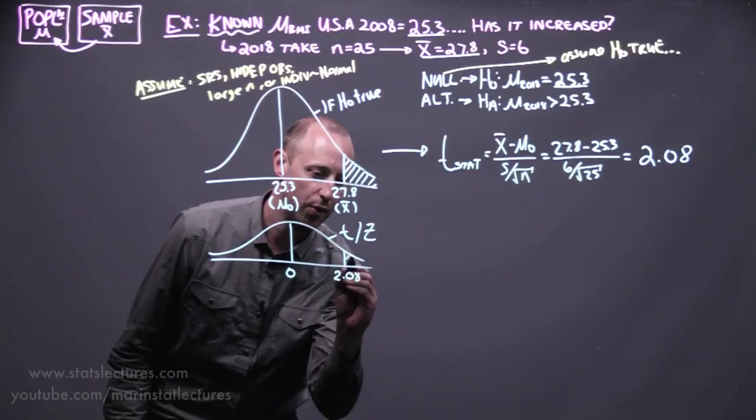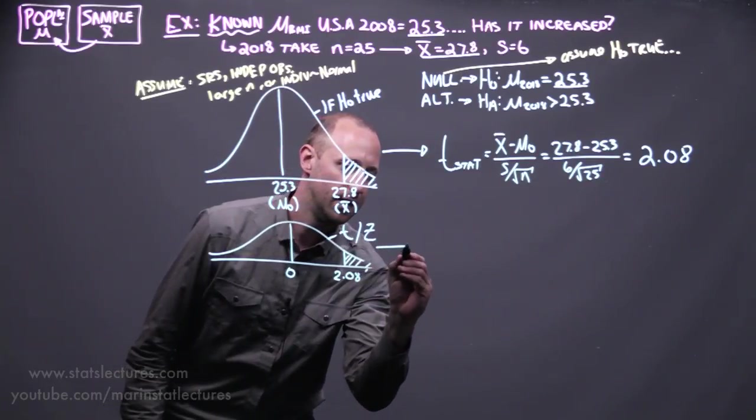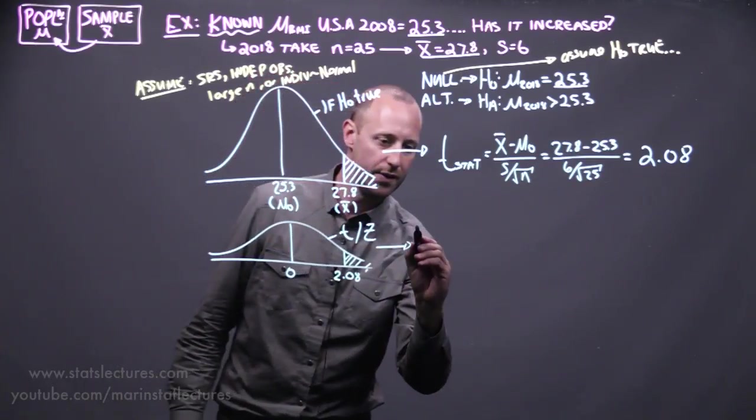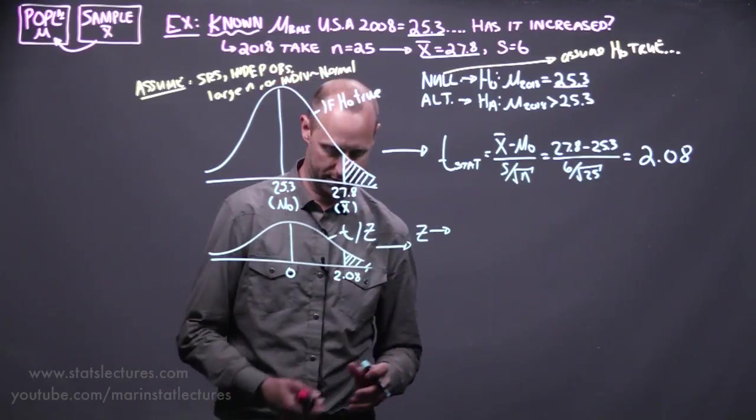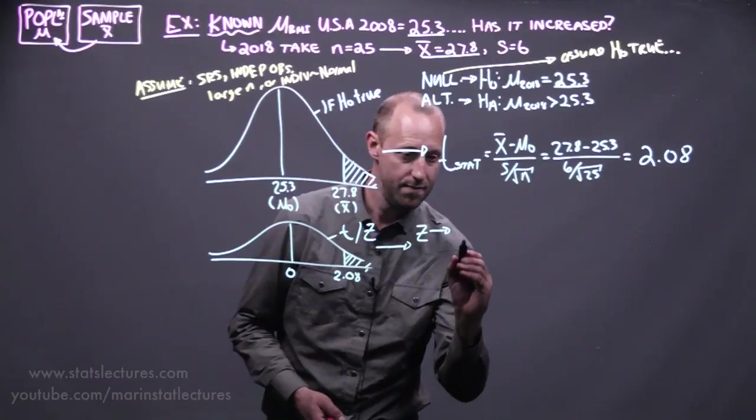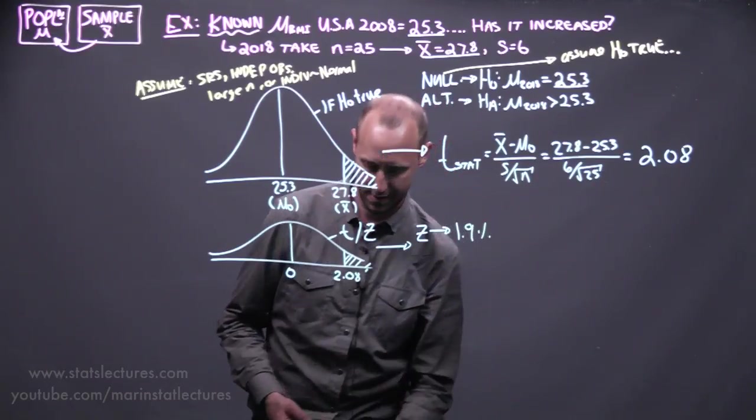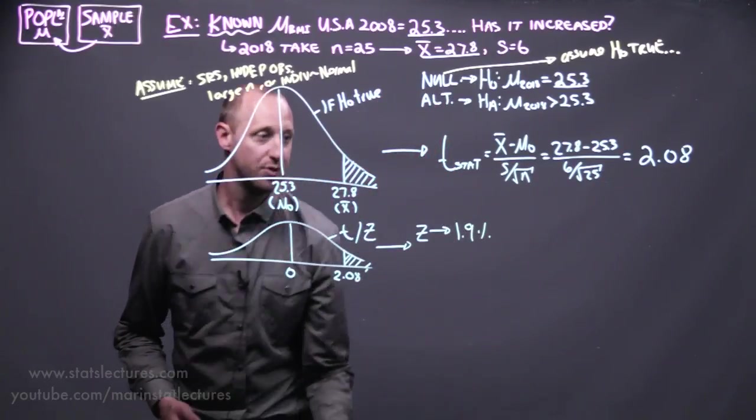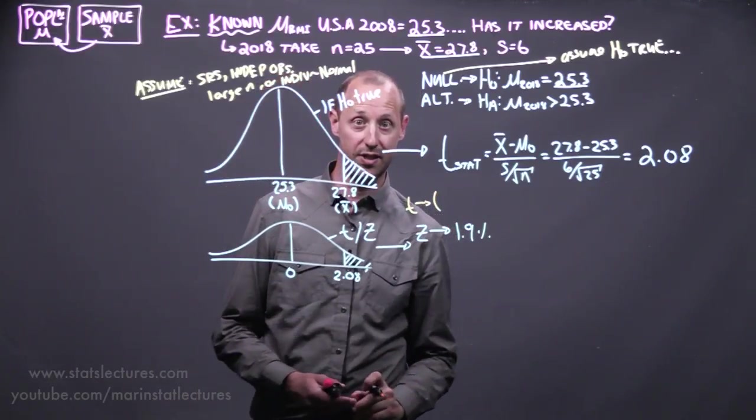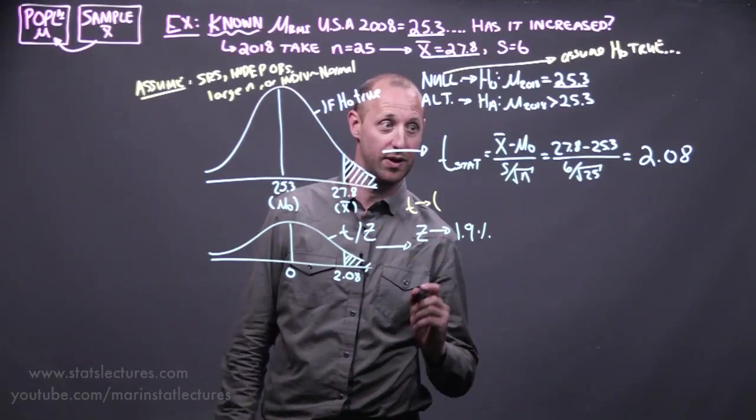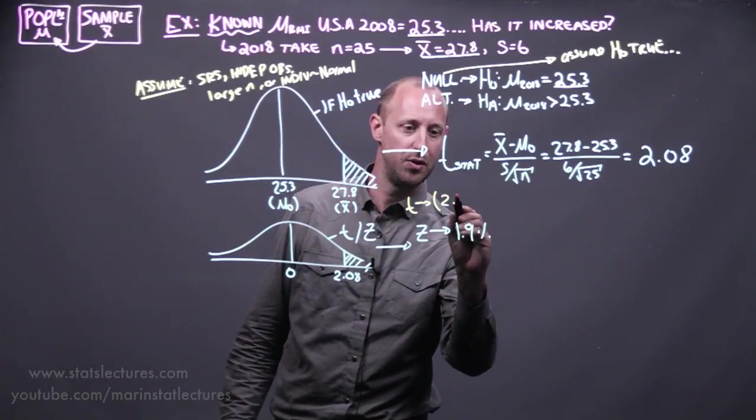So, what's the area above 2.08, and if we work that out using z, it's going to give us 1.9%. And just as a reminder, if you wanted to find the exact value using the t-distribution, which is technically the correct way to do it, it's going to come out to be 2.4%.